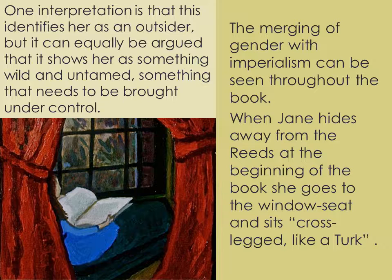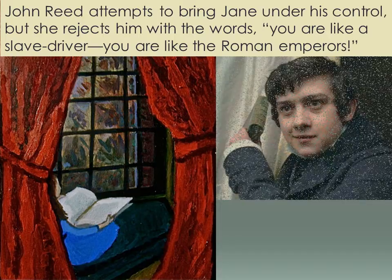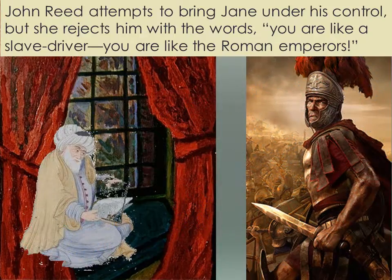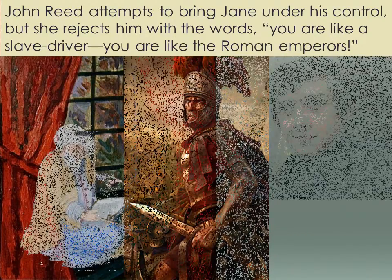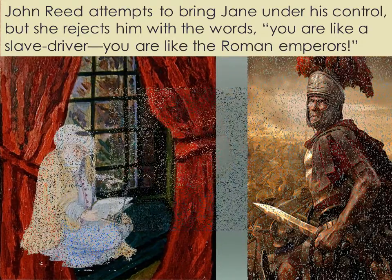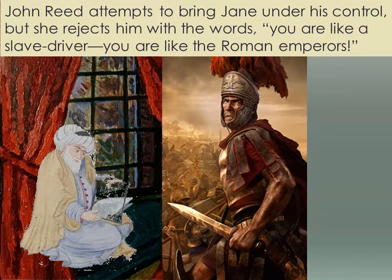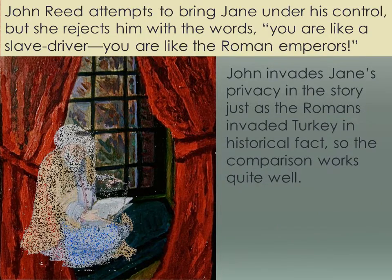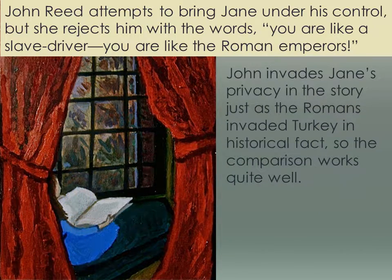She needs to be brought under control — that's the Victorian morality coming in. Her cousin John Reed comes along and tries to bring her under his control; he actually hits her with a book and makes her bleed. She calls him 'like a slave driver, like the Roman emperor.' So there's a direct comparison: she's the Turk, he's the Roman emperor. Once you look for it, this narrative is going on throughout the book.